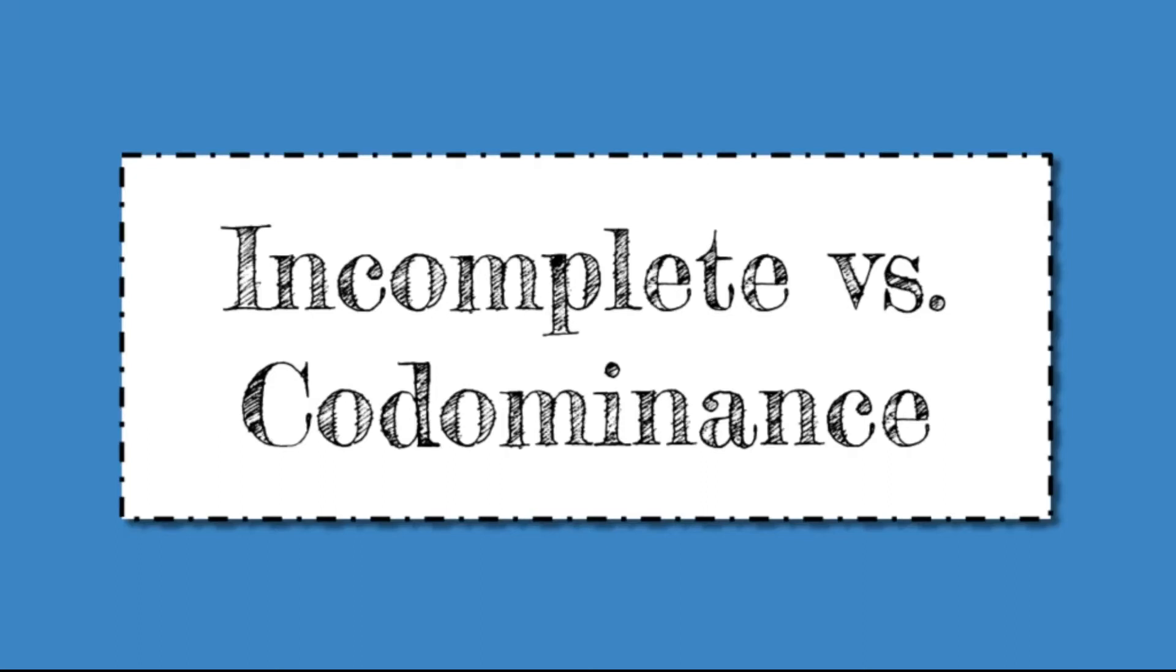Today we're going to look at two examples of when a gene does not have a simple dominant and recessive gene scenario. Those situations are incomplete and codominance.